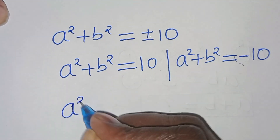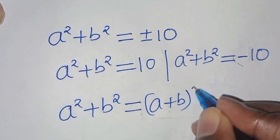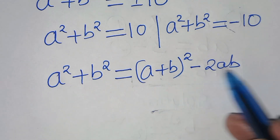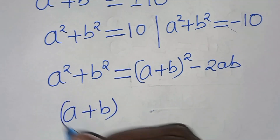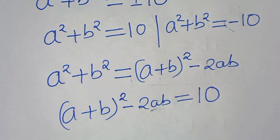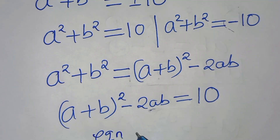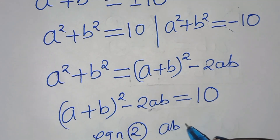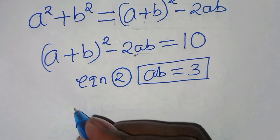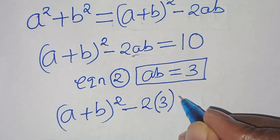For the first case, a squared plus b squared equals 10. We use the identity: a squared plus b squared equals (a plus b) squared minus 2ab. Substituting ab equals 3 from equation 2, we get (a plus b) squared minus 2 times 3 equals 10, which is (a plus b) squared minus 6 equals 10.